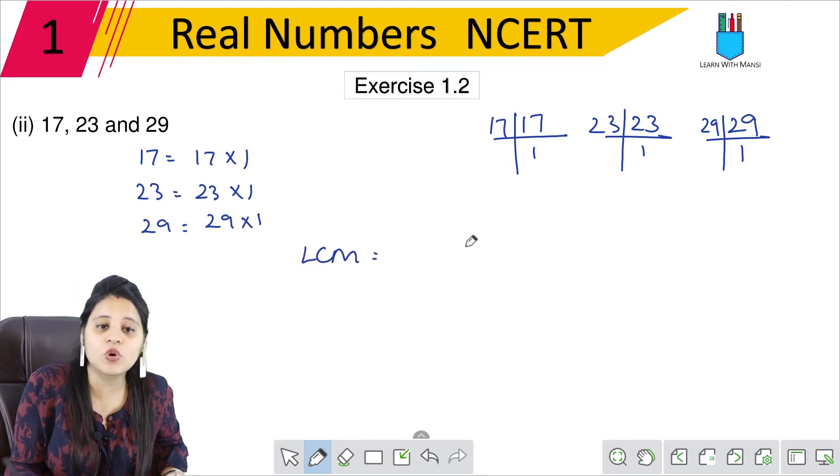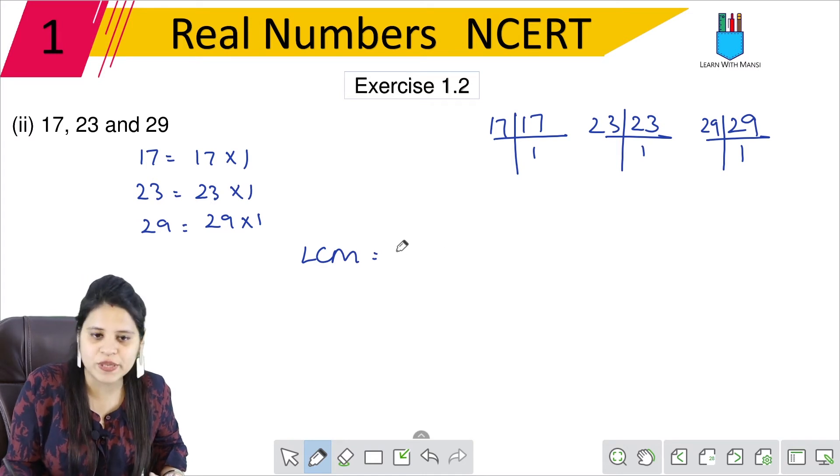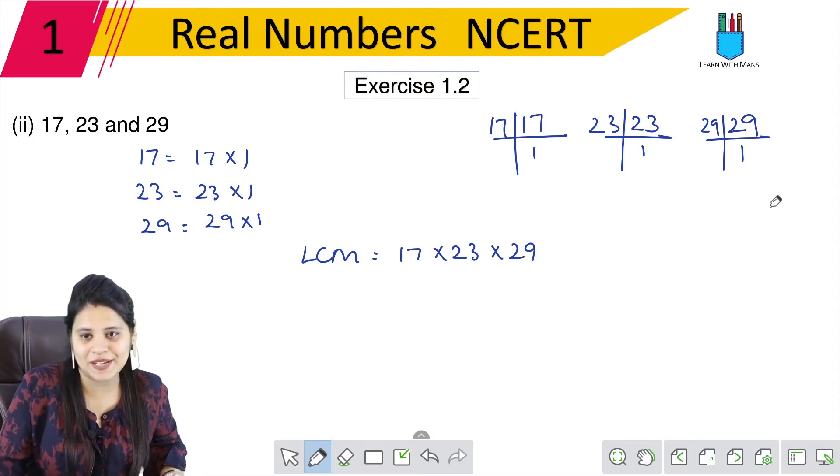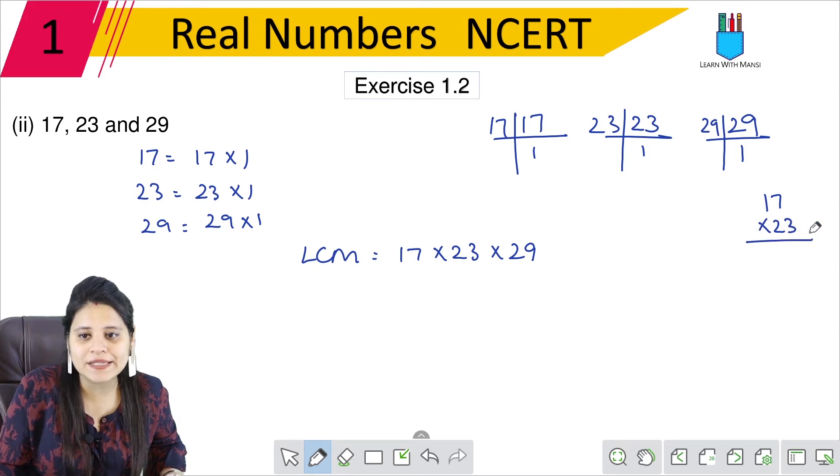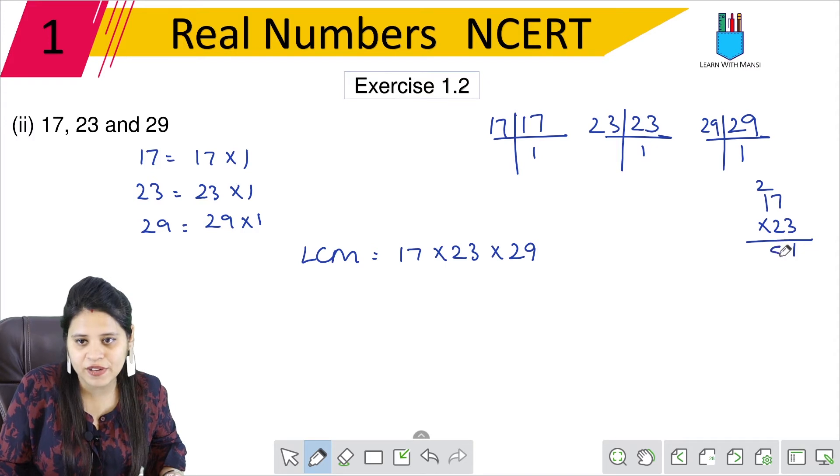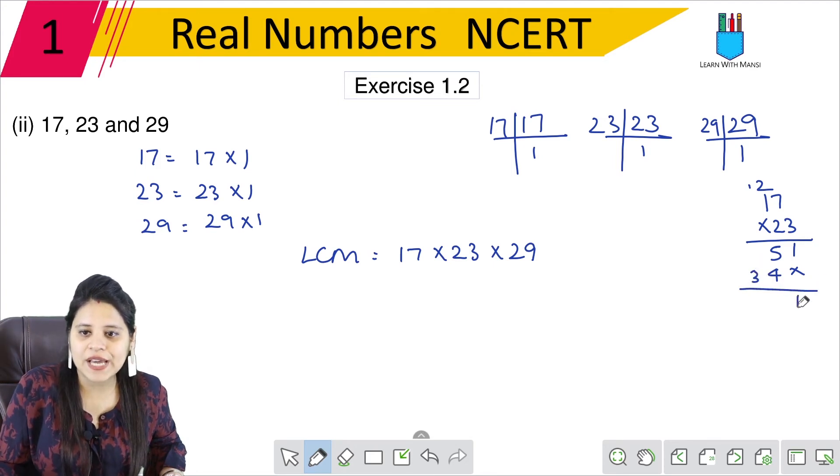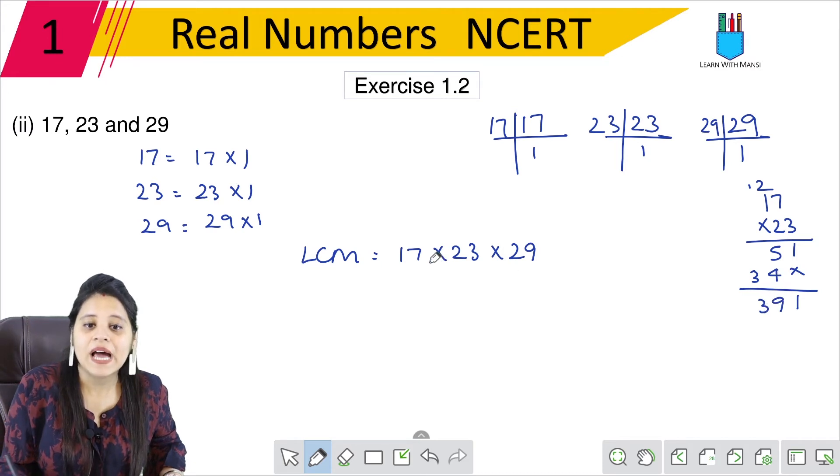Now, when you find LCM, see, there is nothing common. So we have to do 17 × 23 × 29. So we have to do multiplication. We have to do 17 × 23. 3 × 7 is 21, 3 × 1 is 3, 4, 5. And then 2 × 7 is 14. Then 2 × 1 is 2 plus 1, 3. So this is 391. Now we have to multiply by 29.